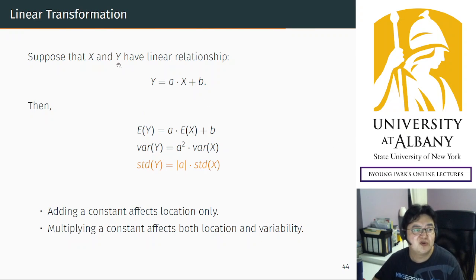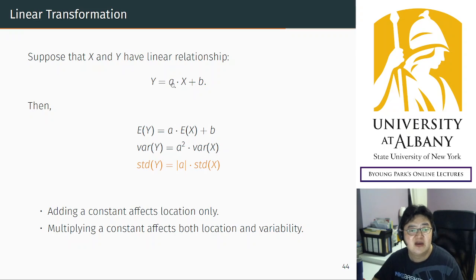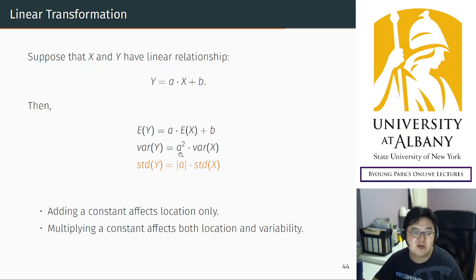You can also study what happens under a linear transformation. Define Y as a linear transformation of the original random variable X. Then the standard deviation of the new random variable is the original standard deviation times the absolute value of a. The reason we take the absolute value is because a may be negative, but standard deviation must always be positive, so we remove the negative sign.